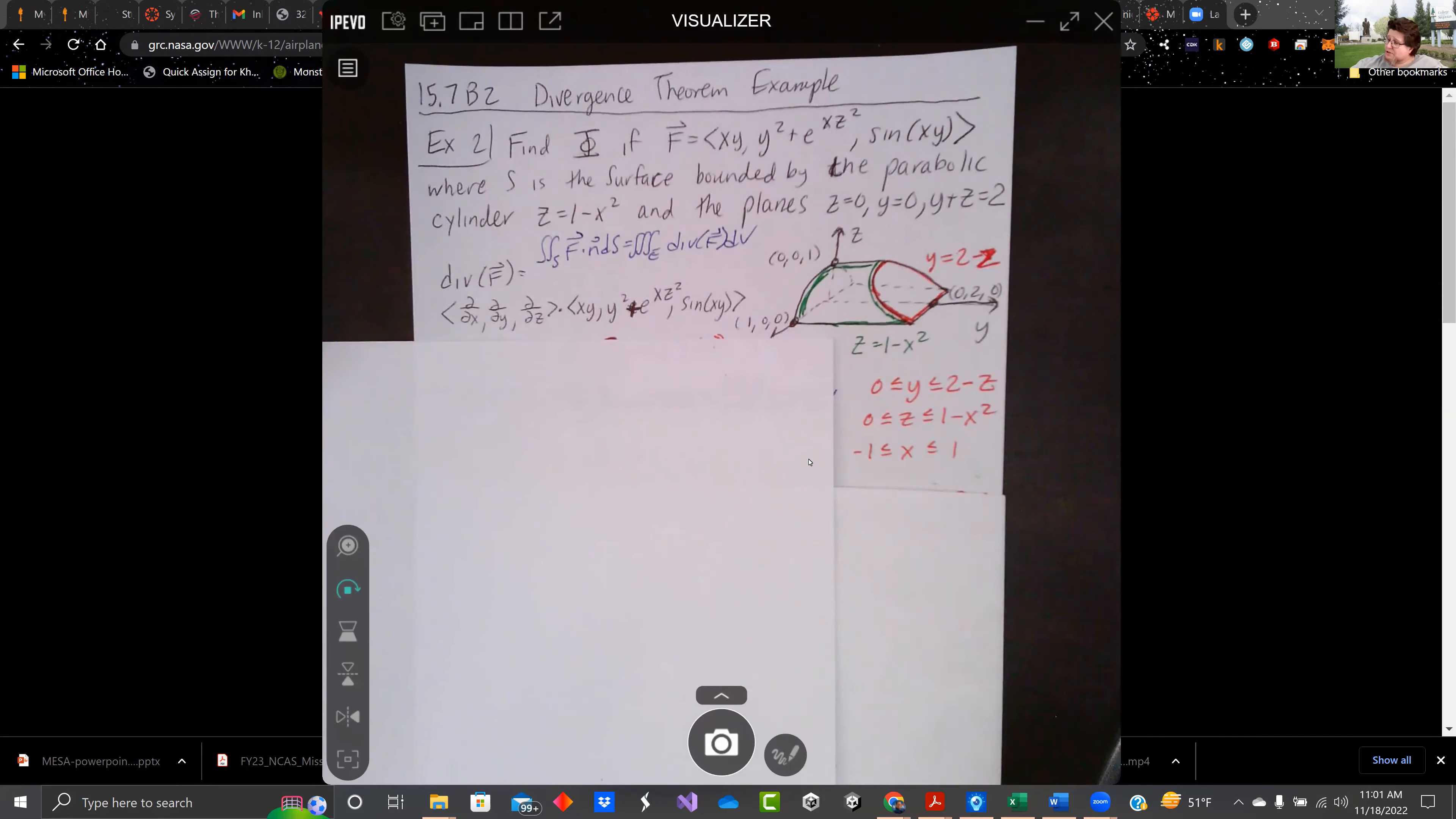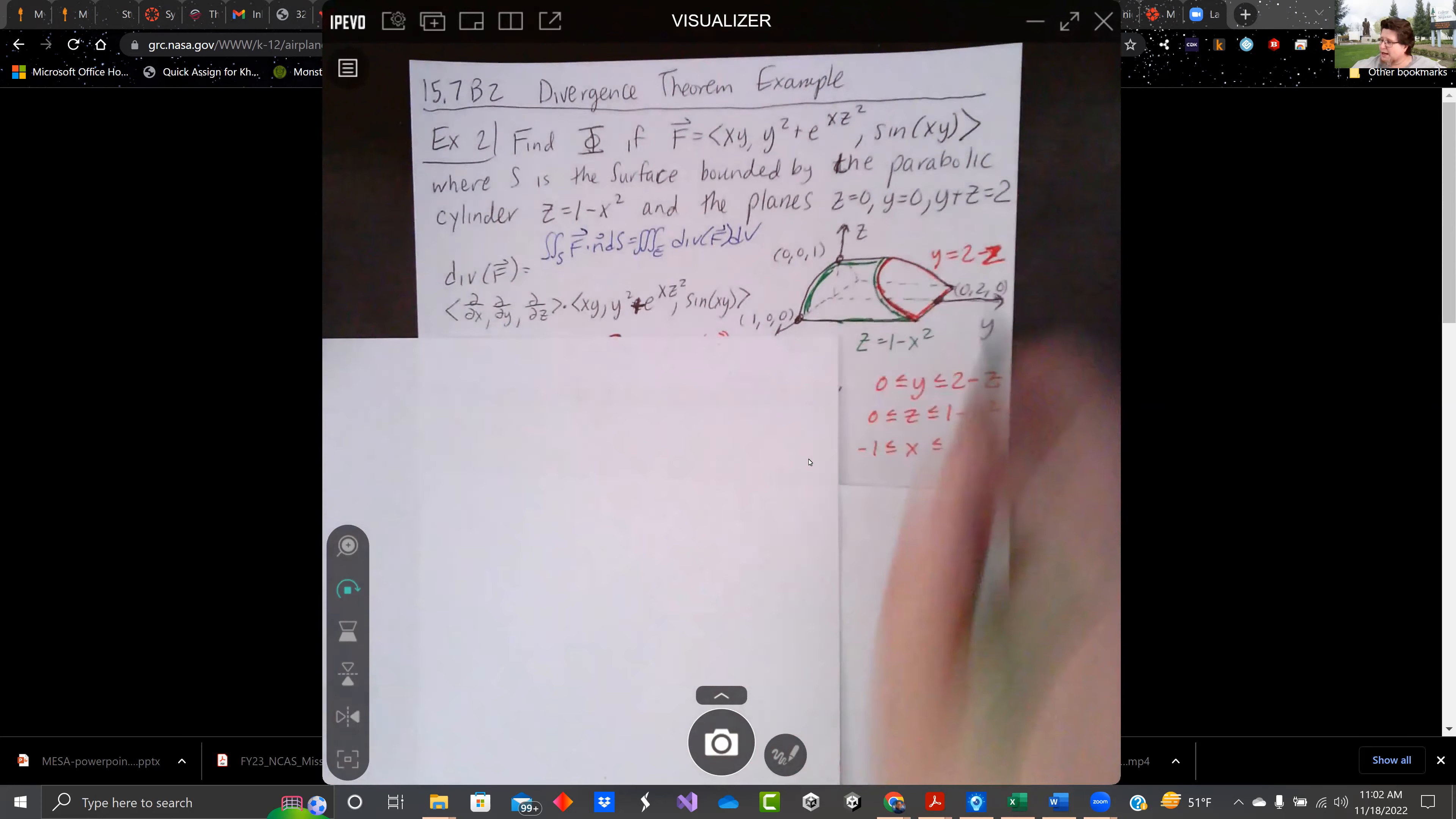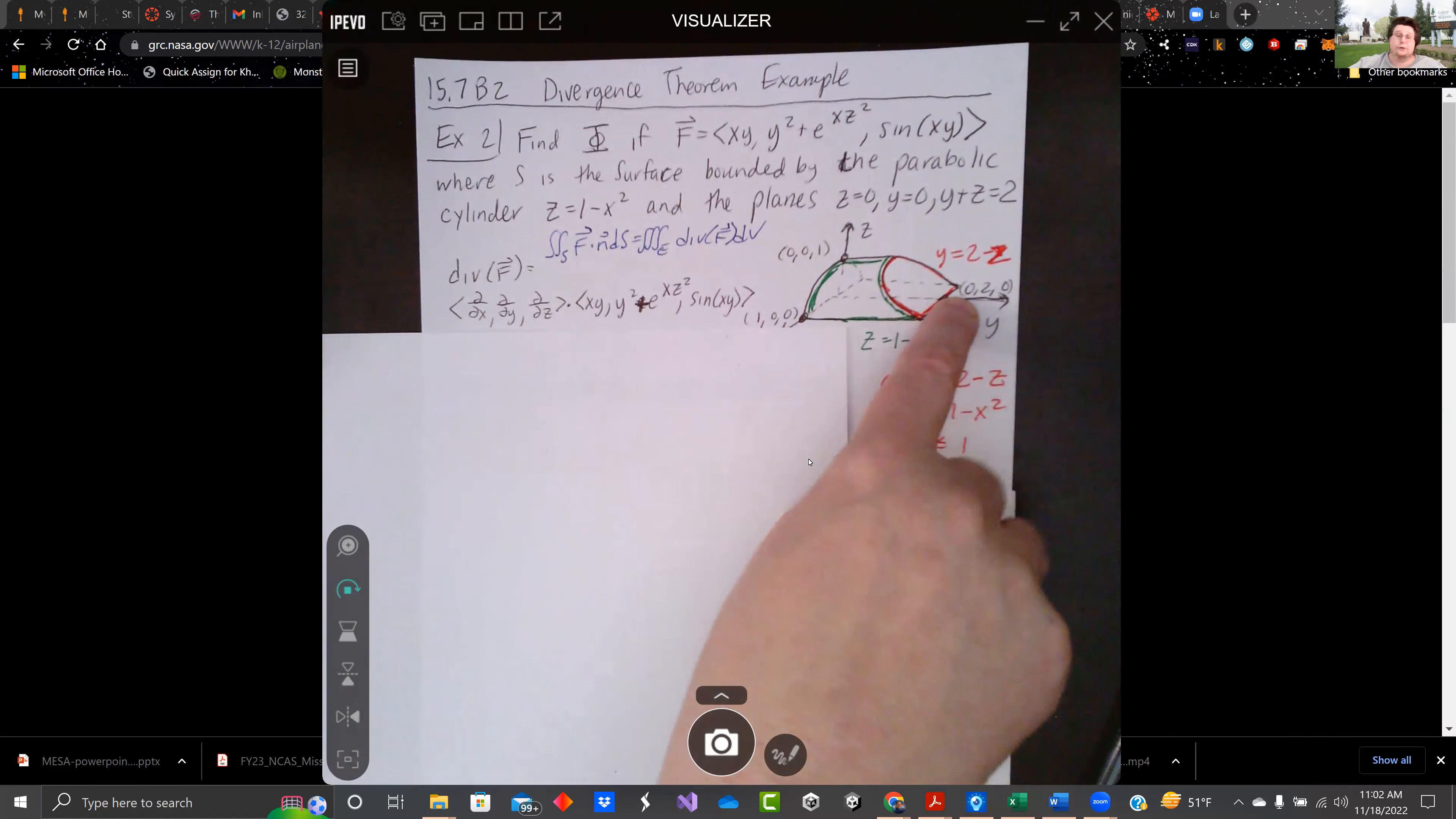So z equals 0 is along the bottom, y equals 0 is along the left, and y plus z equals 2 is a plane that's slicing this way. And so I did what I could to write it as a slice plane. I solved it for y: y equals 2 minus z. So when z equals 0, y would be up here. When z equals 0, y is 2. So it's definitely going downward at an angle like that.